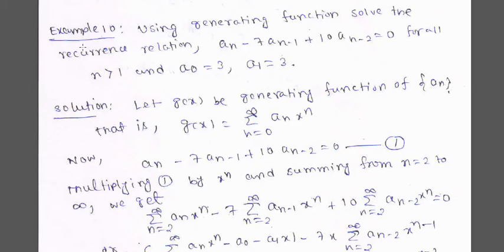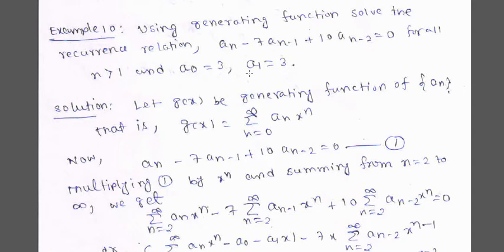Hello and welcome back. In my last video I was talking about example 10, which says: using the generating function, solve the recurrence relation aₙ - 7aₙ₋₁ + 10aₙ₋₂ = 0. This relation is true for all n greater than 1, with initial values a₀ = 3 and a₁ = 3. Due to a technical issue I did not complete the whole video, so today I am starting fresh from the beginning.